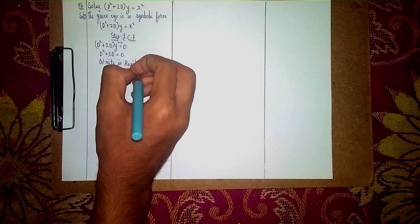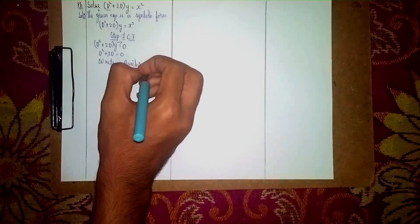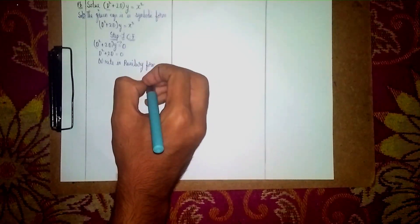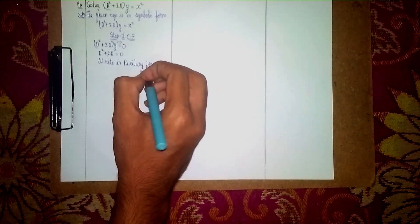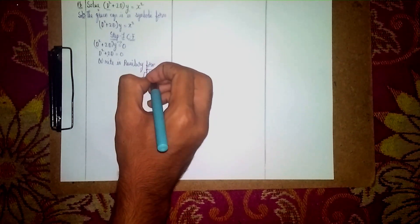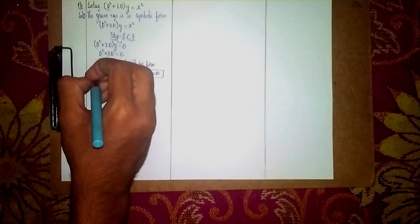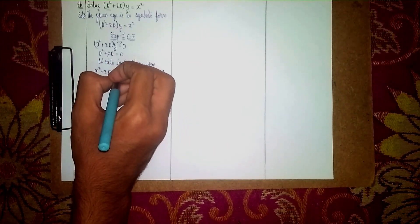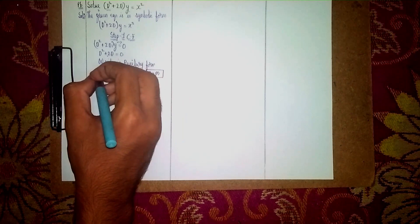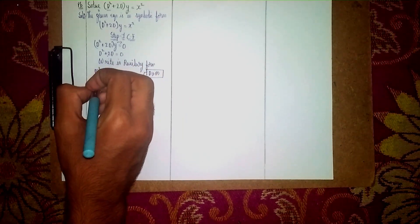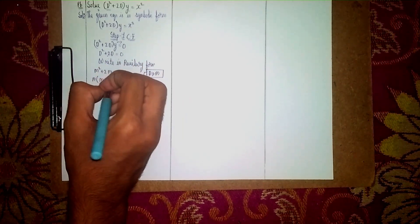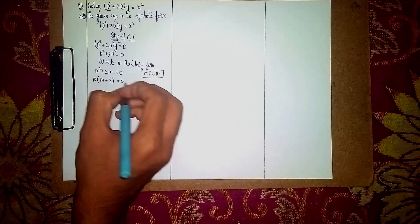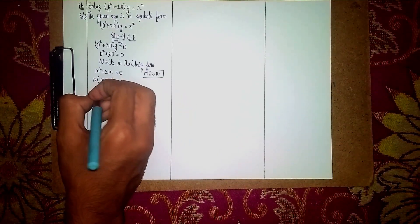In auxiliary form, instead of D we write m. So it becomes m² + 2m = 0. Now take m as common: m(m + 2) = 0.